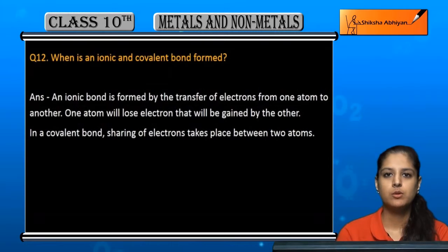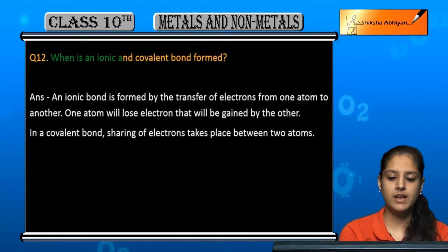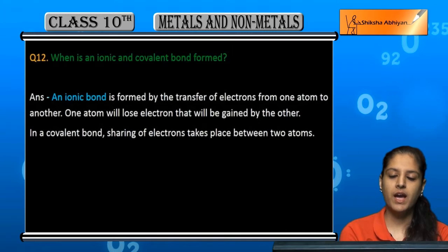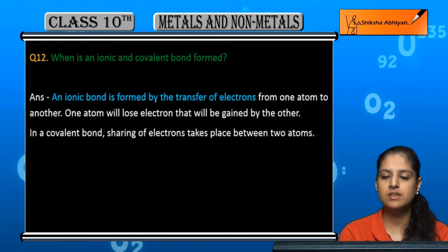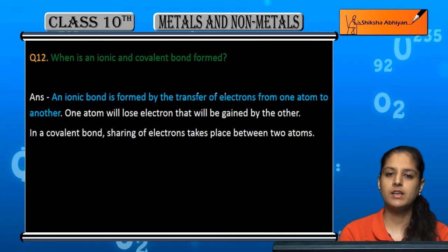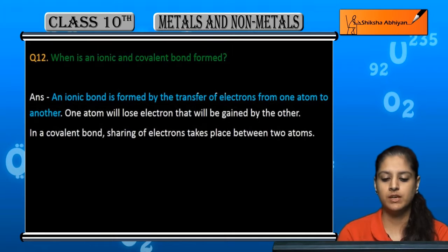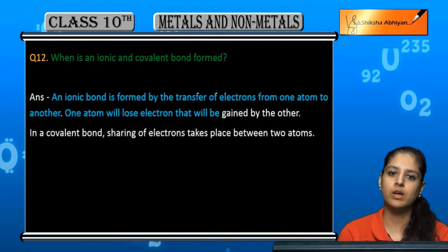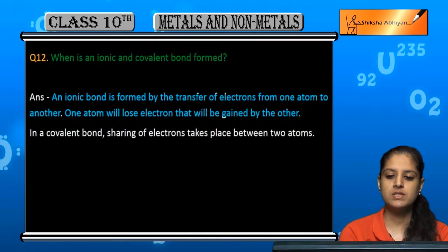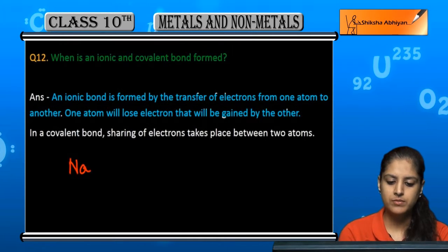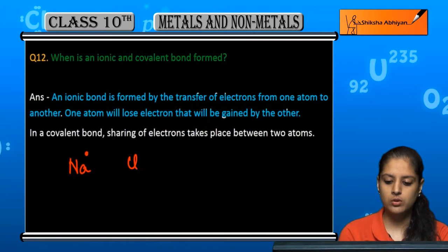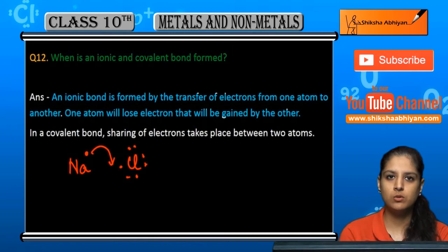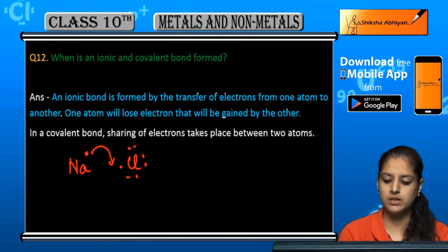Question 12: When is an ionic bond formed? An ionic bond forms through electron transfer — one atom loses an electron and another atom gains it. For example, sodium has one extra electron which it loses, and chlorine has one electron less, so it gains that electron from sodium. This is an ionic bond.